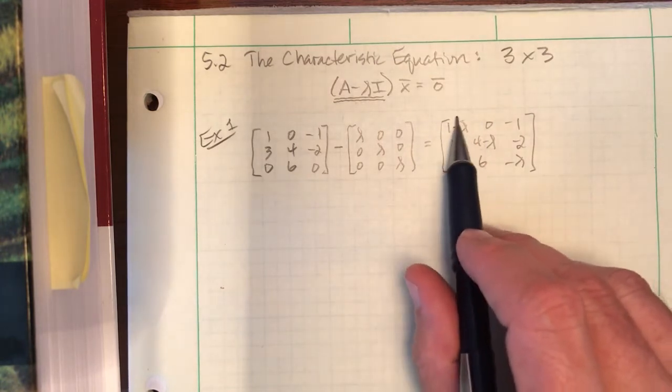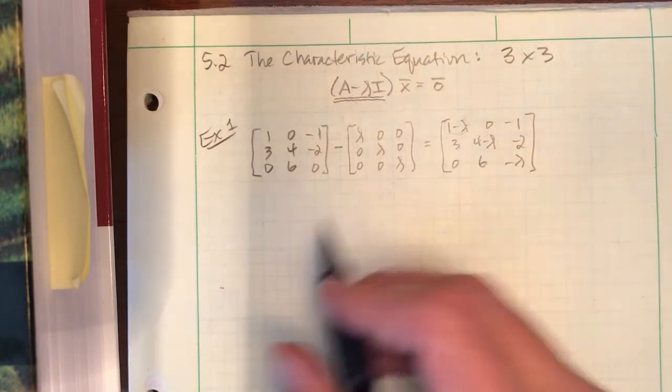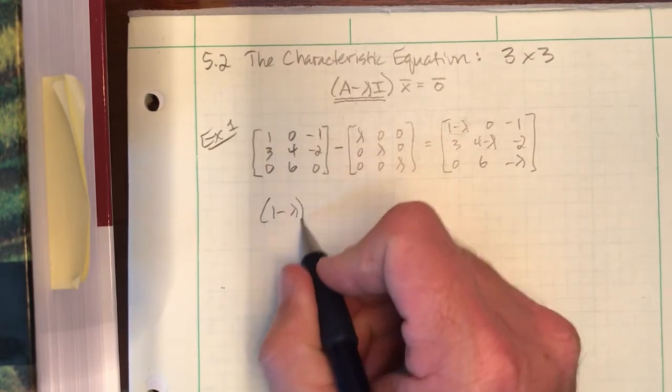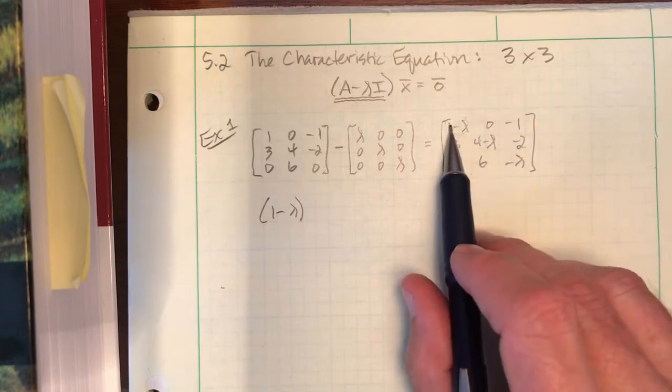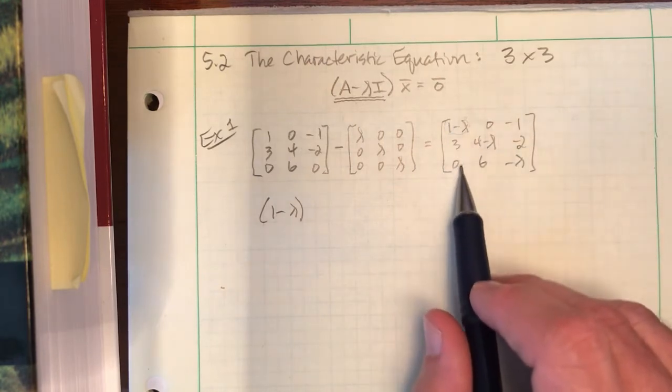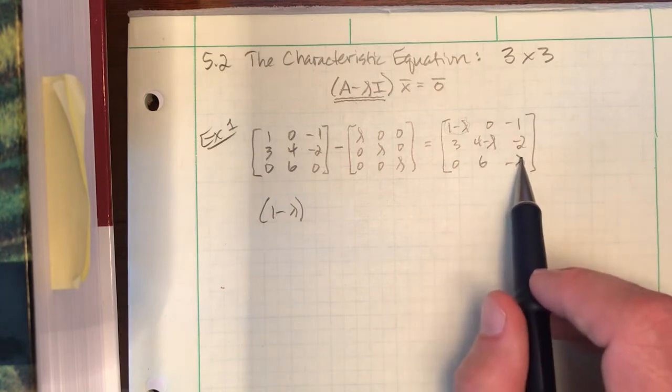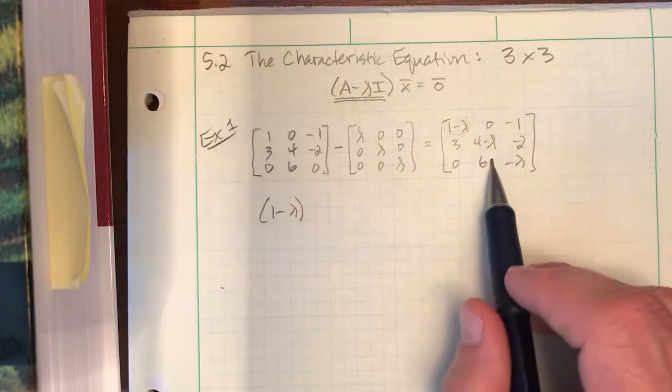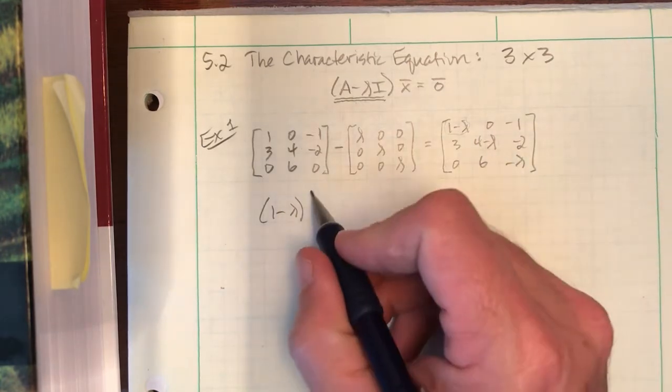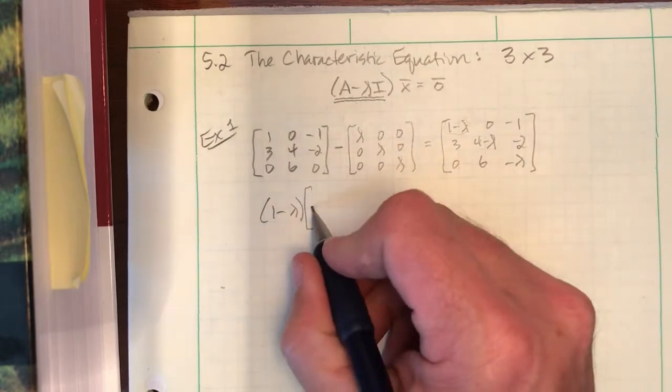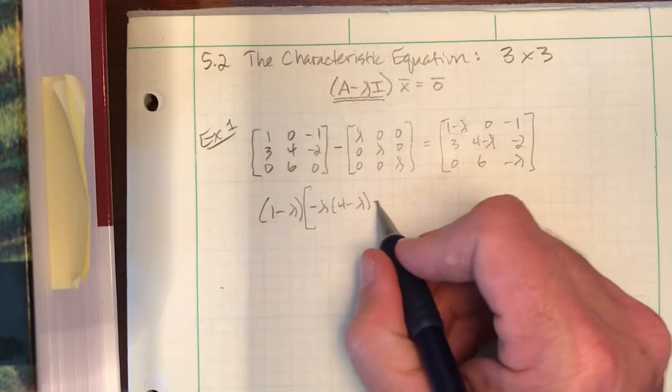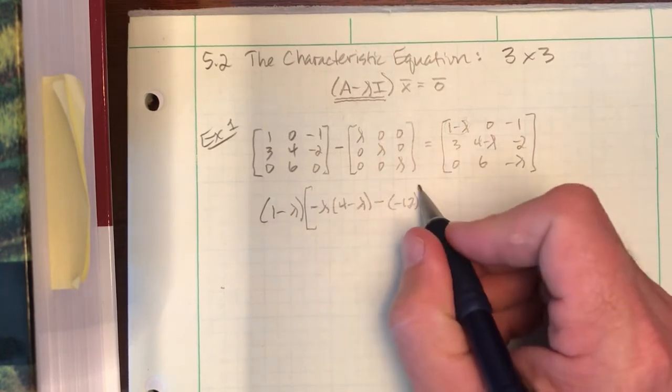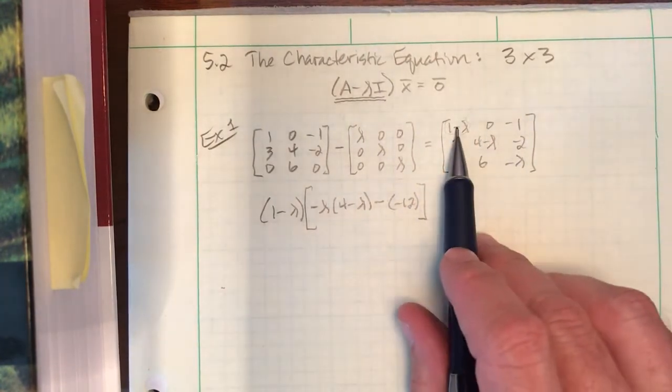And it all begins by working with each entry. So I take 1 minus lambda and I multiply that by the determinant of the submatrix that's left over. If you can imagine crossing out that row, crossing out that column, this submatrix is a 2 by 2. And so its determinant falls back to the classic multiply the diagonals and subtract. So let's show that. So I'll put negative lambda in front of 4 minus lambda minus negative 12. So that's the beginning of my cofactor approach.